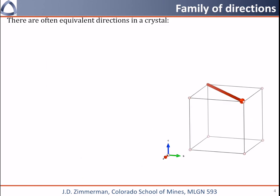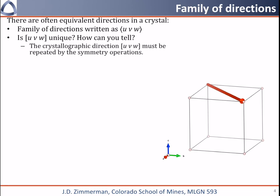Because crystals are often symmetric, there are often multiple directions in a crystal that are equivalent to each other. We call all of the equivalent directions a family. A family of directions is written as uvw in angle brackets, as I show here. If you're given a crystal structure or a unit cell and a direction uvw, you want to know what other directions are equivalent to it. The real answer is that the crystallographic direction uvw must be repeated by the symmetry operations. We haven't covered this yet, so we'll come back to this later on in the class.